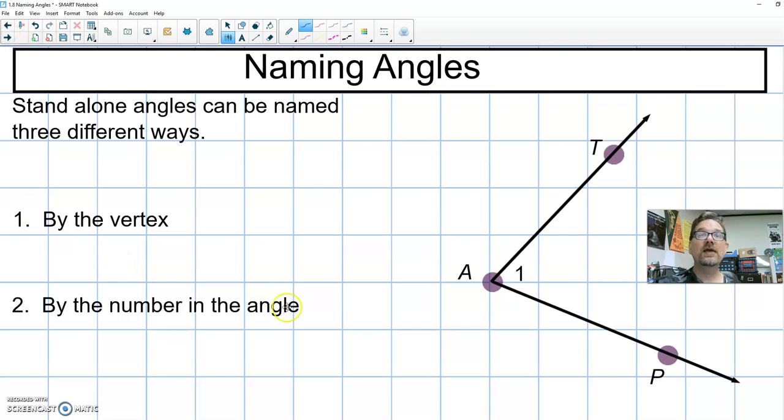I could also, if there is a number in the angle, we can name it by this angle. So I would call this angle 1. This symbol, which looks like a squished L or a little bit like a less than sign, actually means angle. So this is an angle. So I could call it angle A—that's naming it by the vertex—or I could call it angle 1 because there's a number inside the angle.